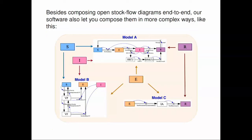In addition to composing stock flow diagrams end-to-end the way you compose morphisms in a category, we could compose them in more complicated patterns. Here are three stock flow diagrams, all of which share a stock E, for example. You'd like to stick them all together and identify those three E stocks, the two R's, the two I's, and the two S's. That turns out to be possible in a certain class of categories called hypergraph categories, where you can use operations in a certain operad to glom together morphisms in these more complex patterns. That's very useful in practice, because you want a lot of freedom in how you build models out of smaller parts.